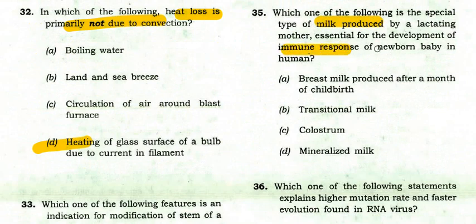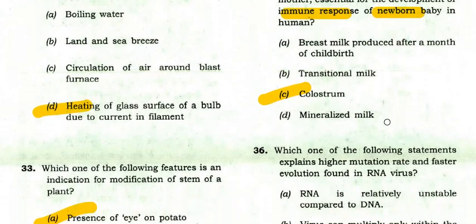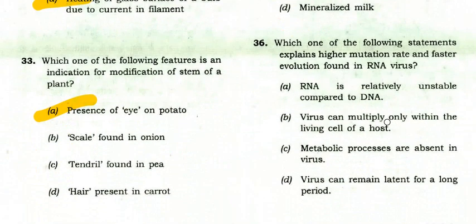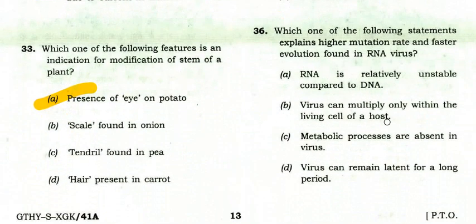Which special type of milk produced by a lactating mother is essential for the development of immune response in a newborn baby? The right option is C: colostrum.